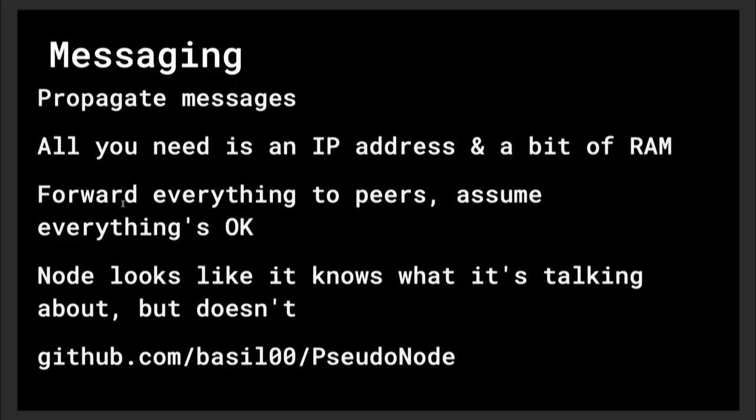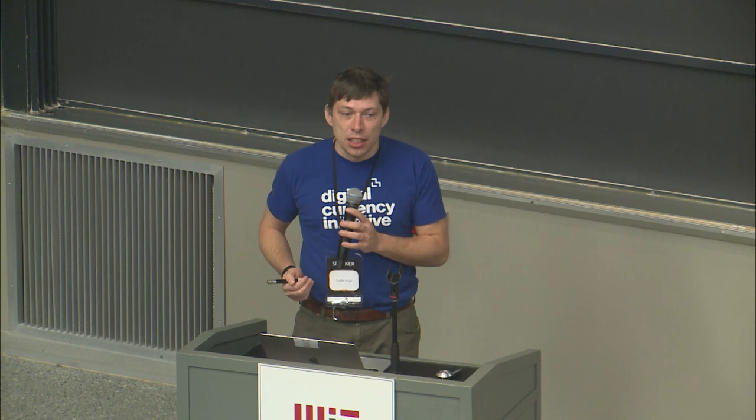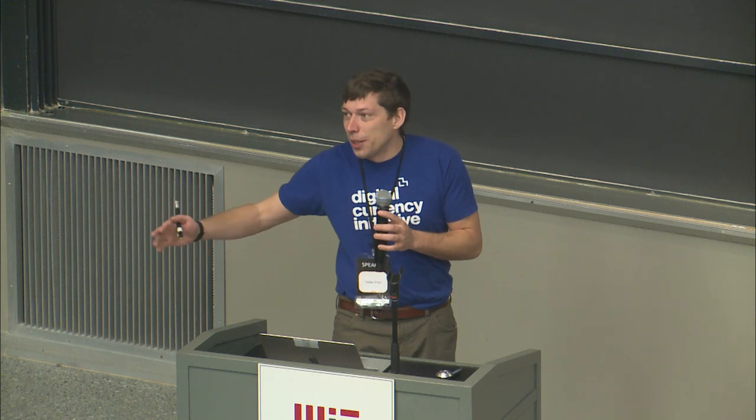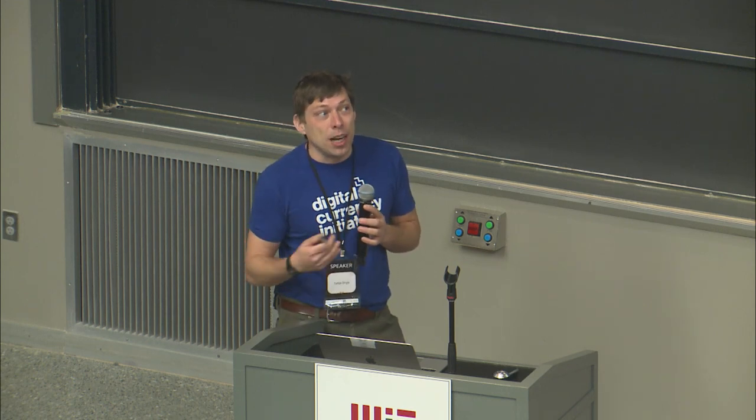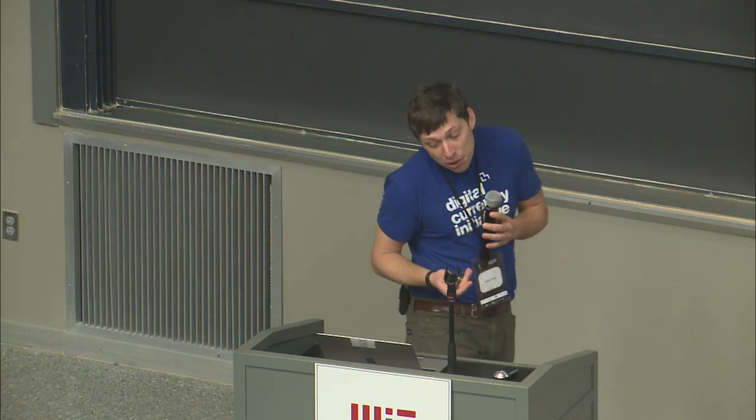There's software that looks like a node but isn't — it's called pseudo node. It runs on a computer, connects to Bitcoin nodes, and any time someone asks for a block, it just asks someone else for a block and sends it. It looks like a node, receives transactions, forwards them on, but has no idea what's going on — it's just parroting. It's actually not bad for the network; it propagates messages and to some extent obfuscates where transactions are coming from as it relays.